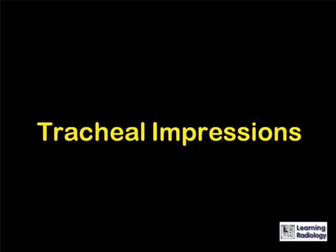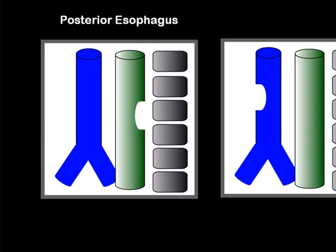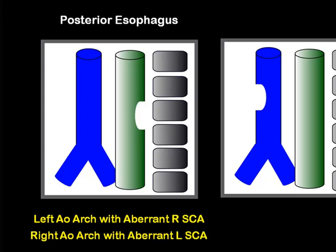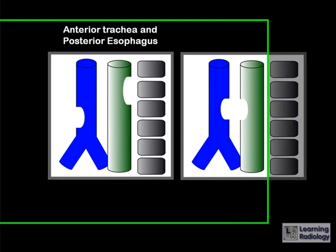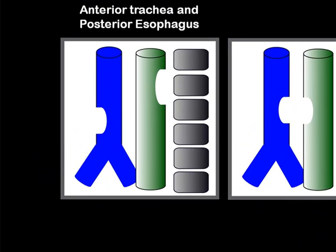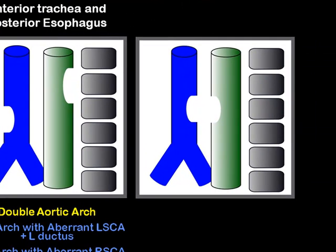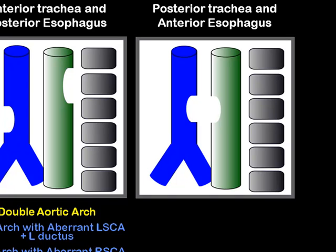Summary of tracheal impressions: a posterior impression on the esophagus suggests a left aortic arch with an aberrant right subclavian artery or a right aortic arch with an aberrant left subclavian artery. An anterior impression on the trachea is rare, with multiple isolated anomalies that are relatively uncommon. An impression on both the anterior trachea and posterior esophagus suggests a double aortic arch. An impression between the trachea and the esophagus suggests a pulmonary sling.